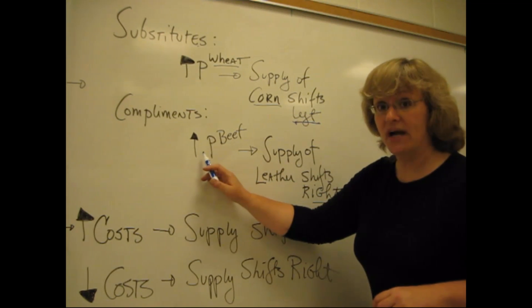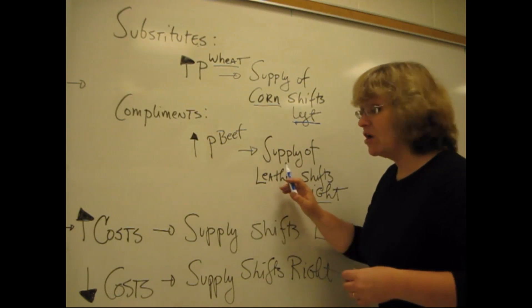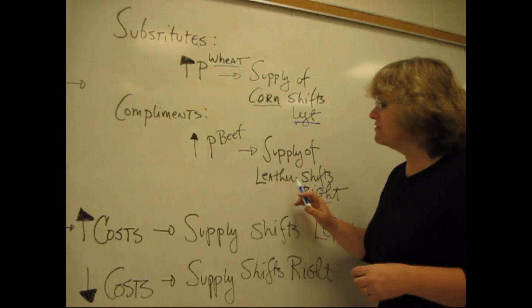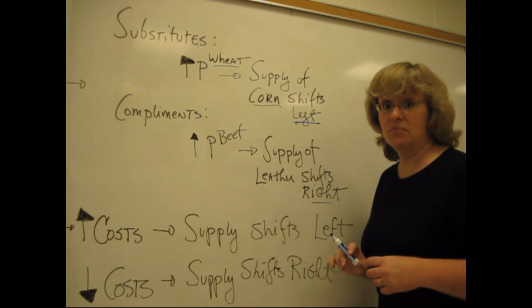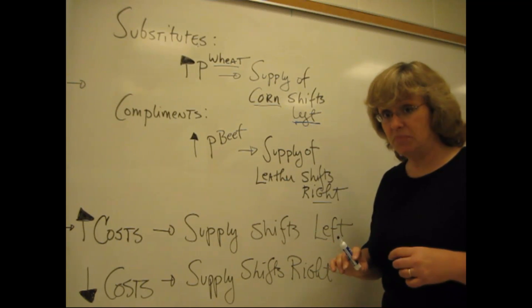So beef goes up in price. The rancher takes more cows to market. That produces more beef to sell, but it also produces an increase in supply of hides and thus an increase in supply of leather. So beef and leather are joint products or complements in supply.